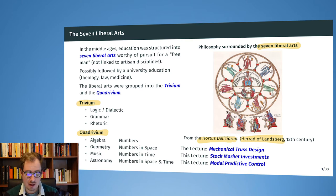And in this lecture we pick up this topic and we will talk about numbers in space. This will be mechanical truss design, and we will be designing a bridge that is as lightweight as possible and therefore solve an optimization problem. The second one is about numbers in time, about stock market investments. So how to invest your money in a way that over time it will gain value, and how to think about the trade-off between the expected revenue and the risk associated with that revenue. And lastly, model predictive control.